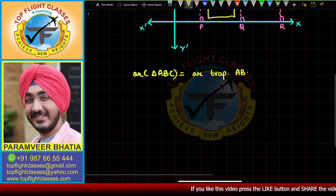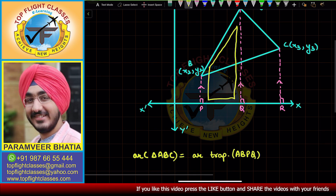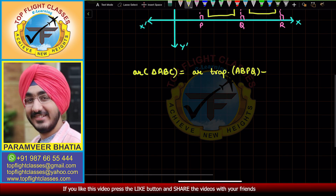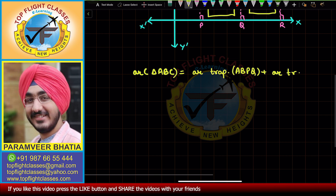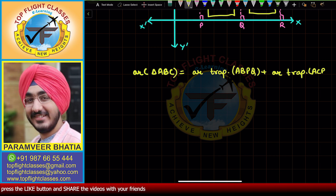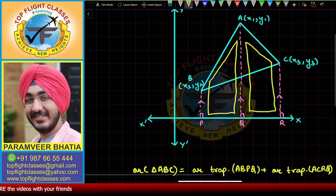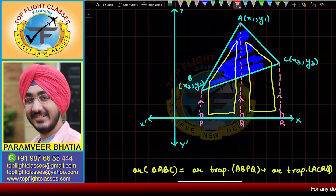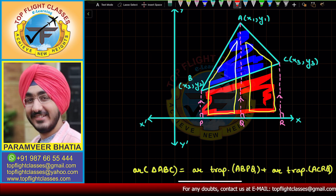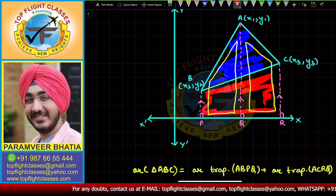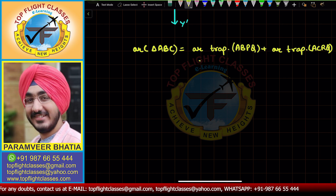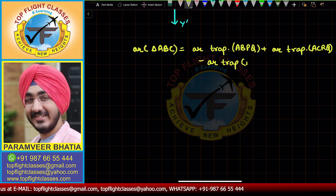We add the area of trapezium ABPQ and the area of trapezium ACRQ, and then subtract the area of trapezium BCRP to get the area of triangle ABC.